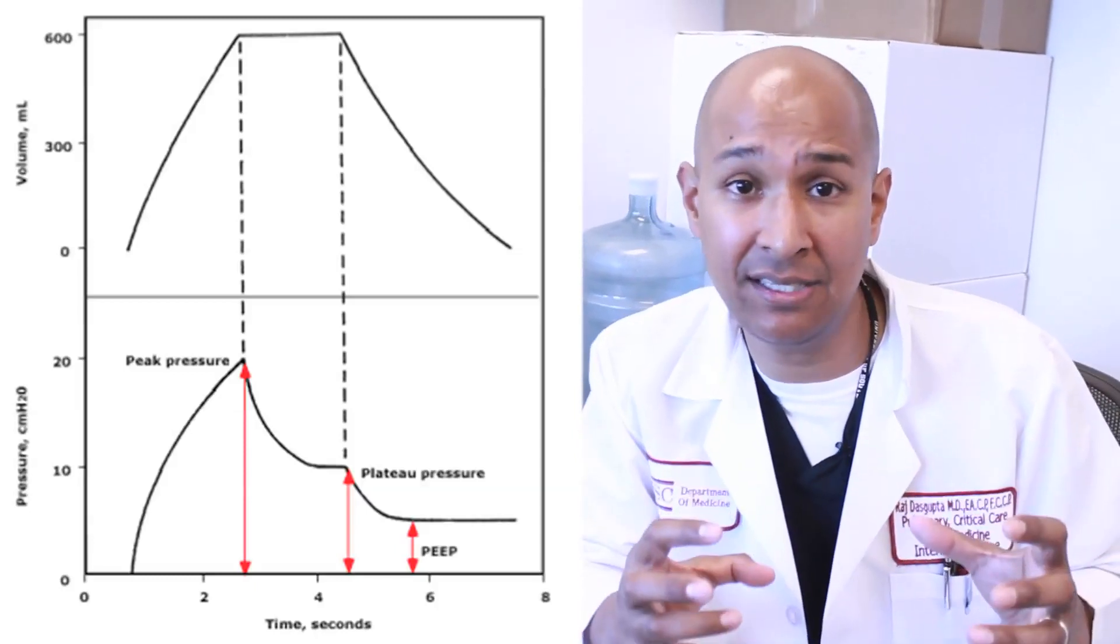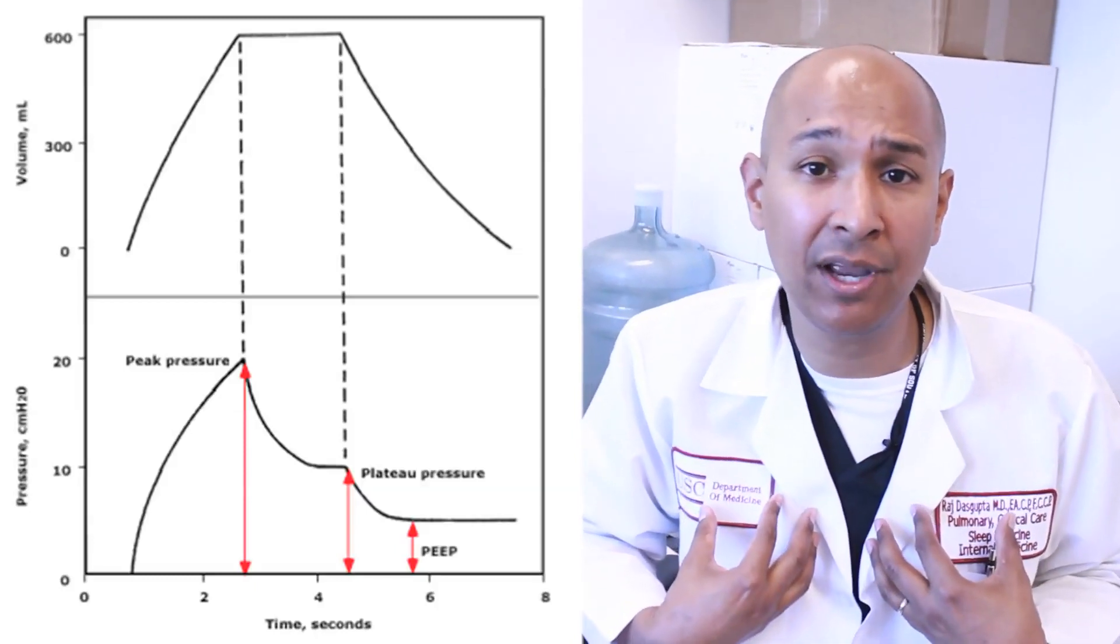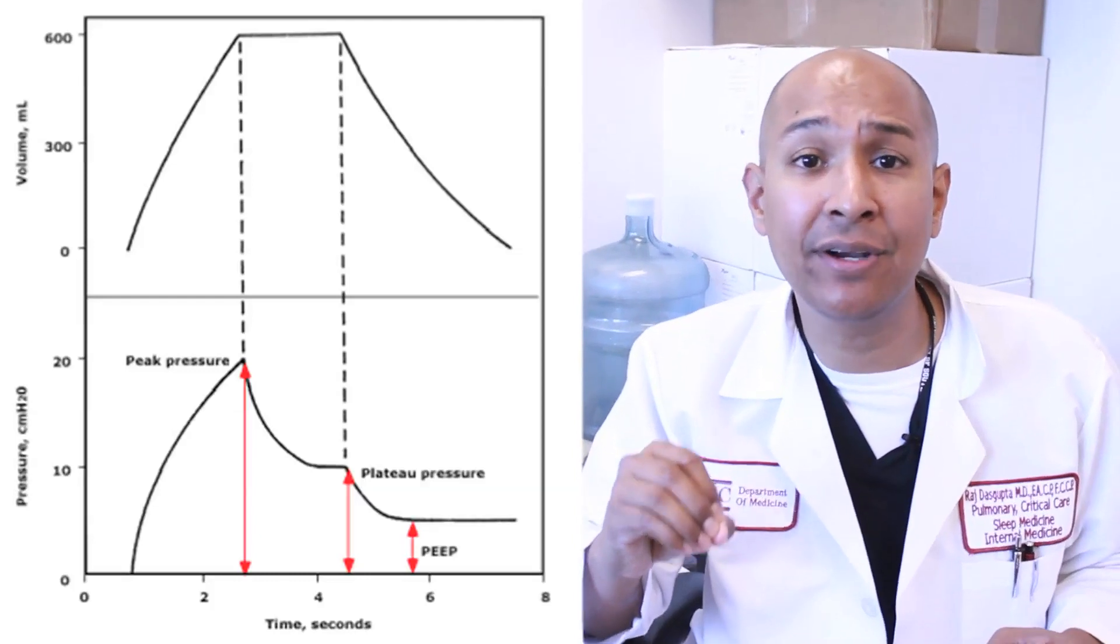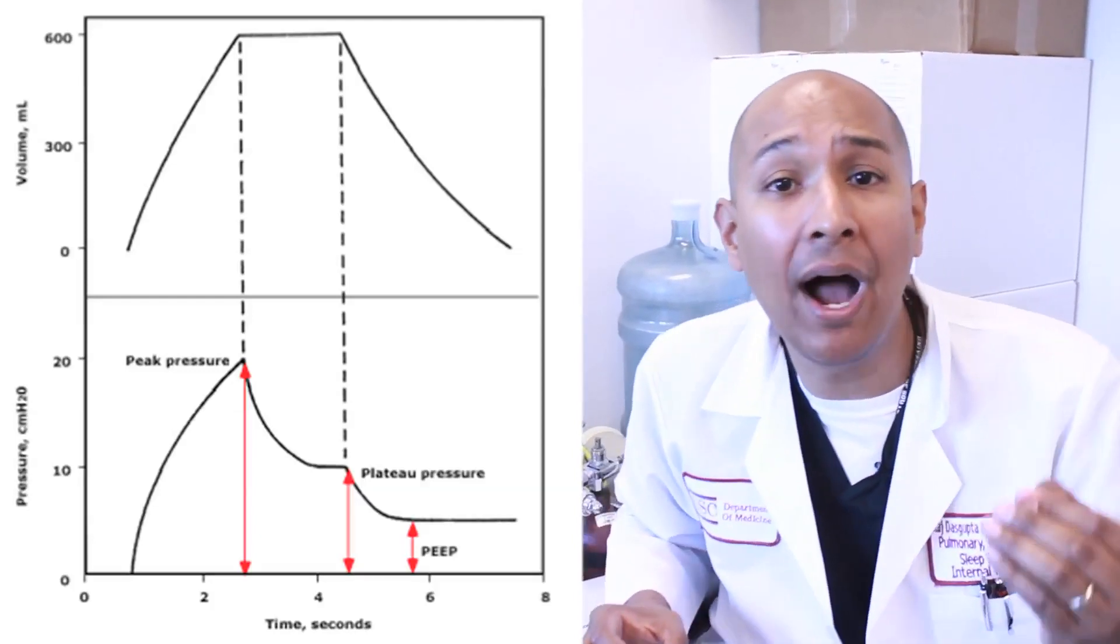peak pressures are for resistance, mainly in the proximal airways, and a plateau pressure is for compliance. Why is this going to be important?